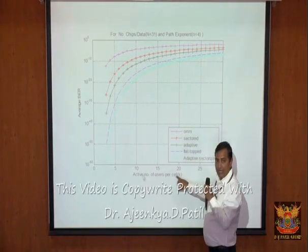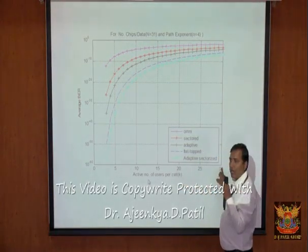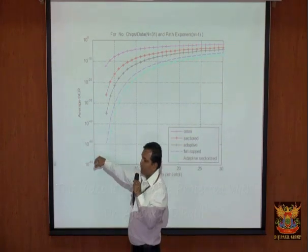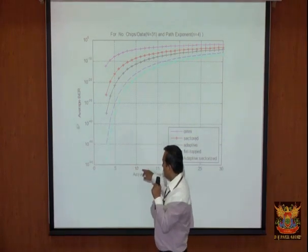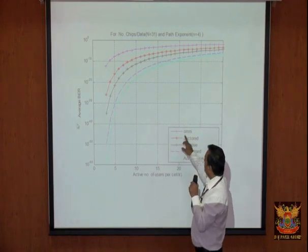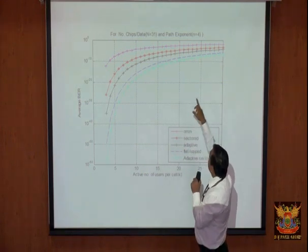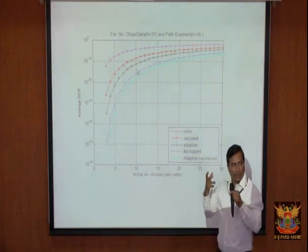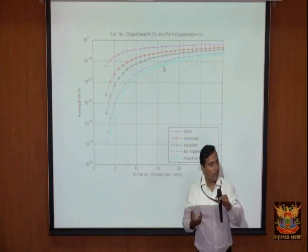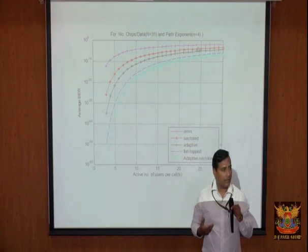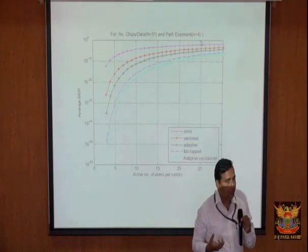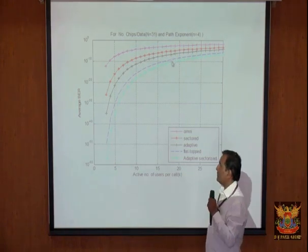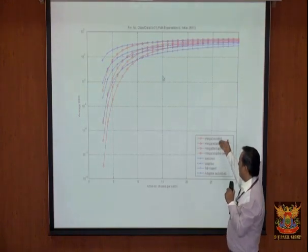As the number of users in a cell increases — I have considered only 30 users — you can see on the x-axis the average bit error rate. As users go on increasing, considering any one antenna, the error goes on increasing, which means interference is increasing. Even for only 30 users, interference goes on increasing.